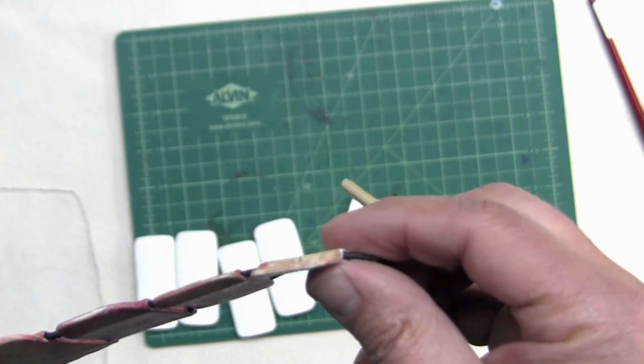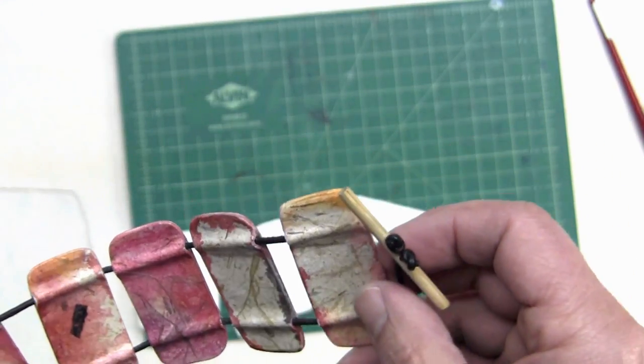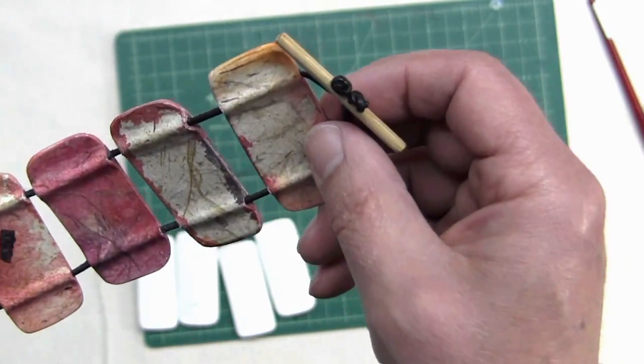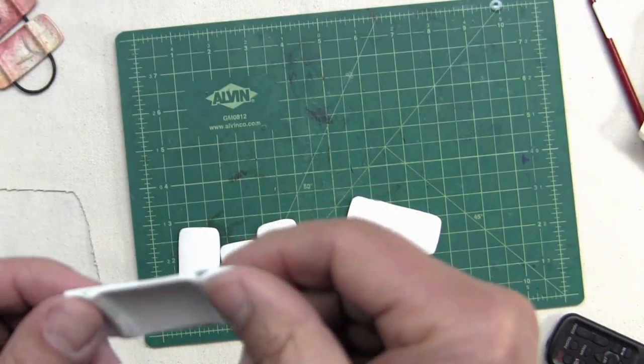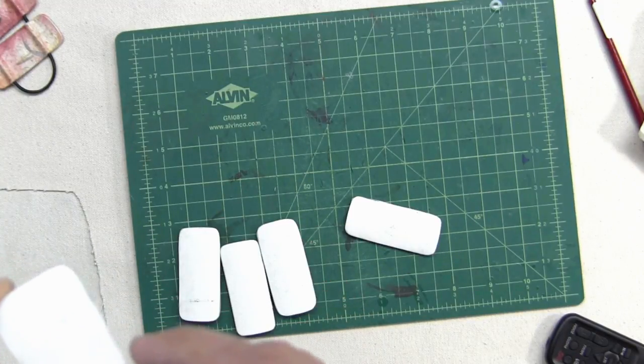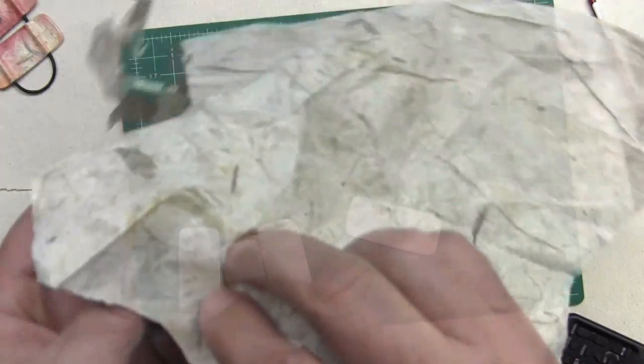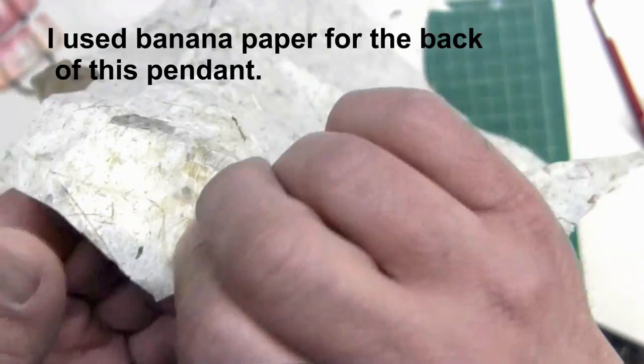For the backs, I usually use the same decorative paper approach that I employ in the pendants. Before I glue the top piece of watercolor to the unit forms, I will apply my decorative back paper.